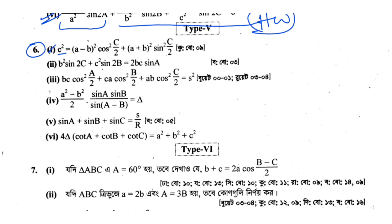c squared is equal to (a minus b) whole squared, cos squared (C by 2), and (a plus b) whole squared, sin squared (C by 2). So we are going to write the right-hand side and then write the answer, so we are going to solve it.